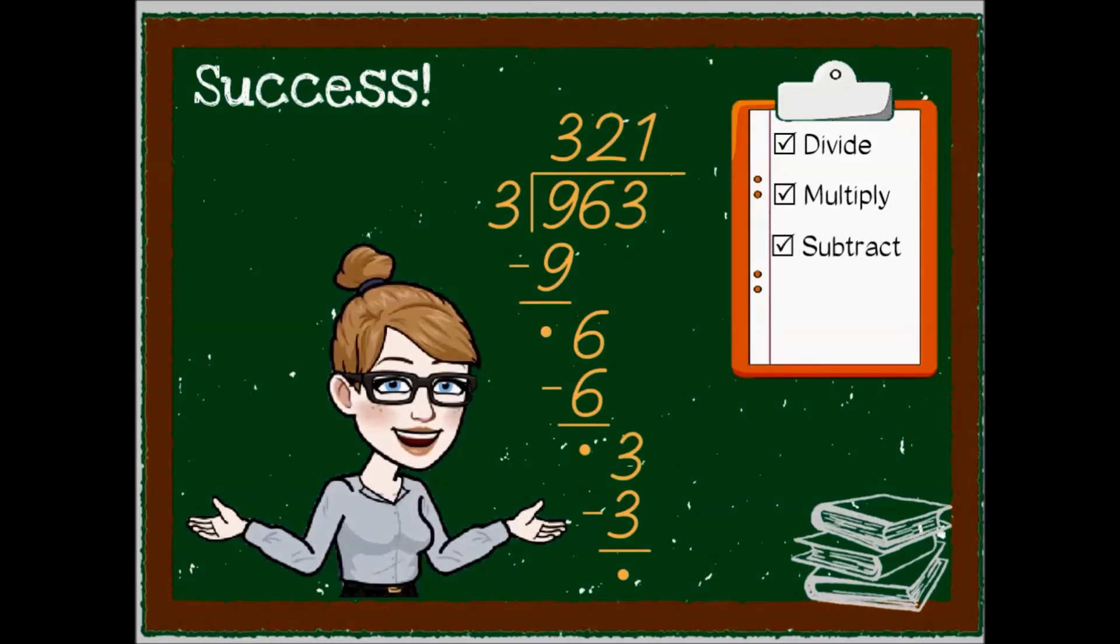Any more numbers in the house that we have not danced with? No one left to come out. We've danced with nine, we've danced with six, we've danced with three. That means we have completed our long division dance.